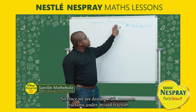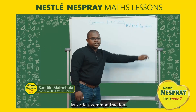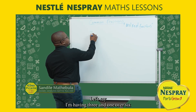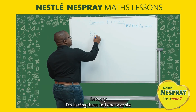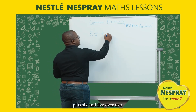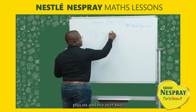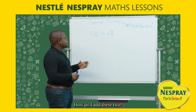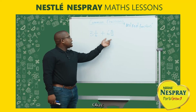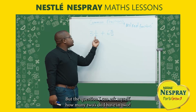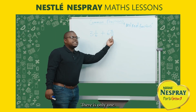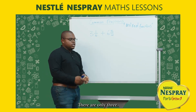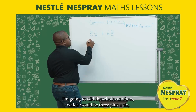Since we are dealing with mixed fractions, let's add: 3 and 1/6 plus 6 and 5/2. The denominators are not the same, so I ask myself: how many twos do I have in 2? There is only one. How many twos do I have in 6? There are three. So that means I'm going to add the whole numbers, which would be 3 plus 6.